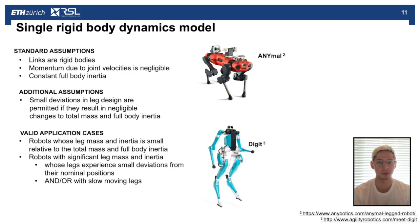Some application cases for these assumptions: they're valid for robots whose leg mass and inertia is small relative to the total mass and full body inertia. So that would be, for example, a quadruped like ANYmal, which has relatively light legs relative to the trunk.